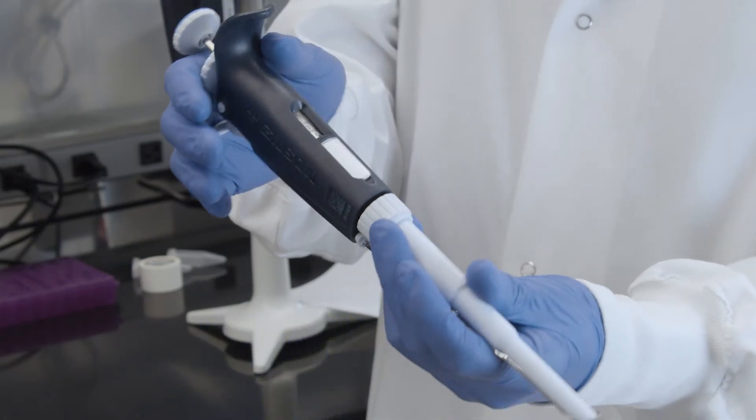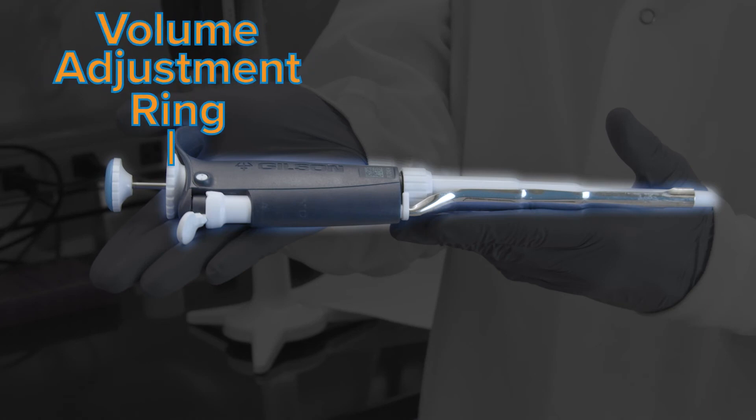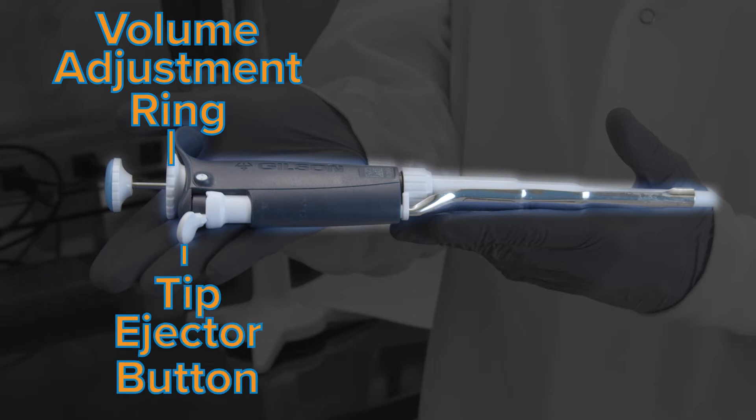Turning the pipette onto its side, you'll see the volume adjustment ring. This is what you'll use to set the volume of the liquid the tip will hold. Next, you'll see the tip ejector button, and further down, the tip ejector itself. This is the mechanism that physically pushes the tip away from the pipette for those easy tip disposals.